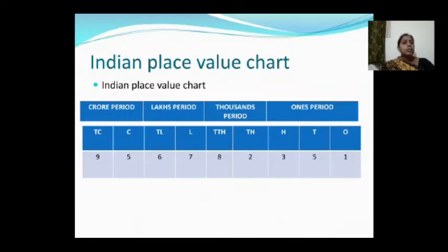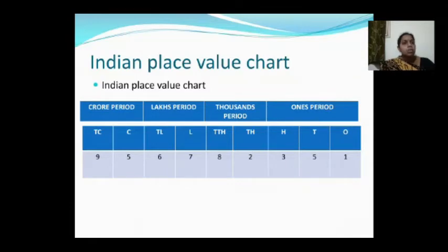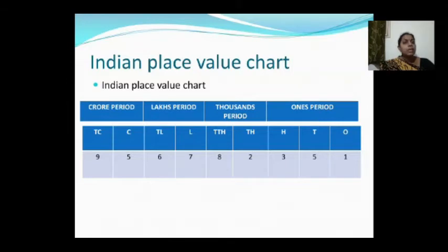The ones period has three place values: ones, tens, and hundreds — all three place values are different. It is named the ones period because it is the first period, and the first place value in it is ones. Remember that only the ones period has three place values.